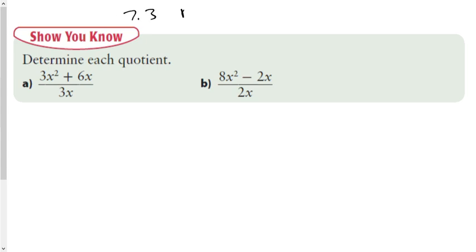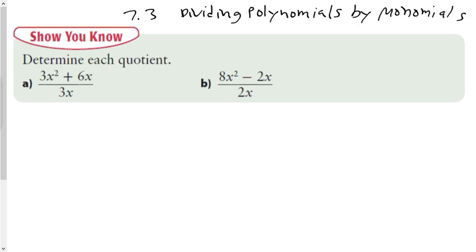Our last unit in chapter seven is called 7.3 — it's dividing polynomials by monomials. For this particular one they're using binomials again because it's the easiest thing to do. And like chapter 7.2, which was multiplying monomials by binomials or trinomials or polynomials, the division is going to have three different ways we want to think of it.